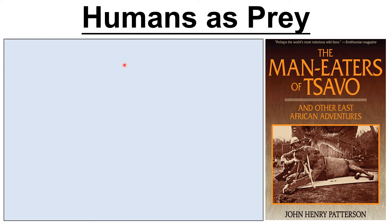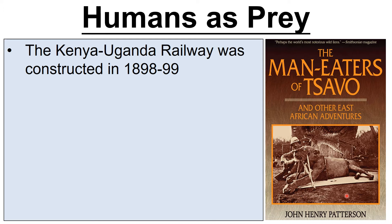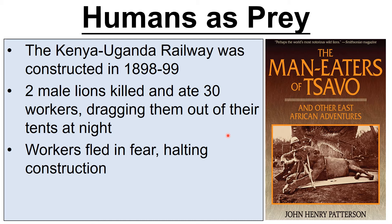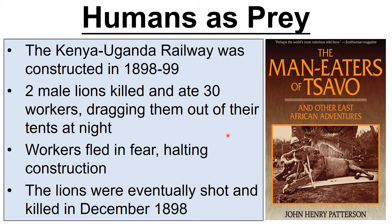Just to show this doesn't have to be something from very long ago — here are man-eating lions. About 122 years ago, this railway was constructed in Africa, the Kenya-Uganda railway. People were out there in tents building the railway, and there were two male lions who hunted them. About 30 workers were taken away and eaten by these lions. They had to halt construction because workers were in fear. Eventually they did track them down and shoot and kill them, in December 1898.